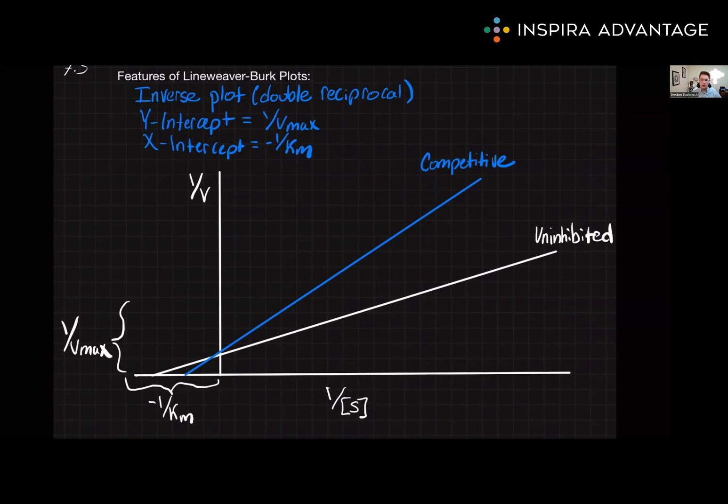Then, we can plot the reciprocal of the initial reaction rate, or 1 over velocity, against the reciprocal of the substrate, 1 over substrate.